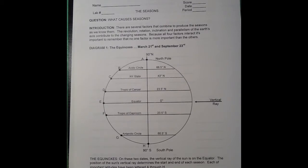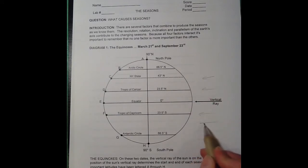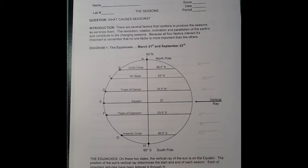If you are looking at Diagram 1, it is supposed to represent the equinox. The equinox is usually somewhere around March 21st or September 23rd, but the date can vary with leap years and the time zone that you're in. On these two dates, the vertical ray of the sun hits the equator, meaning the sun's rays are coming from one side of the diagram. That half of the earth will be illuminated, and the other side will be in darkness.